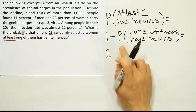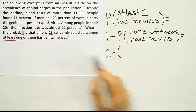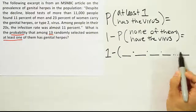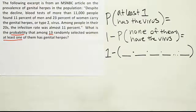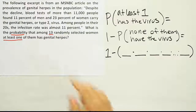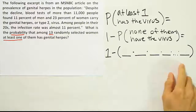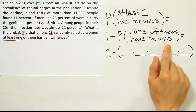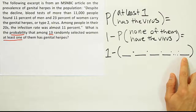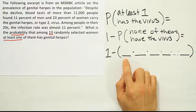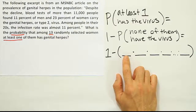Now I need to work out that probability in parentheses. Since there are 13 women, I should have 13 probability spaces. I'm not going to write out all 13 — I would run out of space — so I'll put in a bunch of spaces and indicate there are more, knowing from context there are 13 different women being selected. The first space represents the probability that the very first woman I select does not have the virus, because I'm looking for none of them to have the virus.